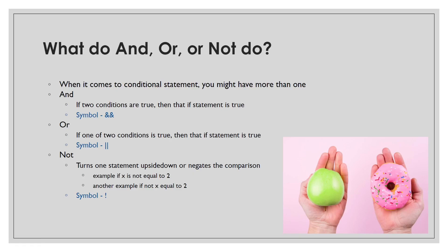And the NOT statement — it basically turns one statement upside down. For example, you could turn a true statement false or a false statement true. It can also negate the comparison, so for example x not equal to two means any number but two is true. Or if you write 'not x equals two': x equals two is true, but the NOT negates it to be false — which is the same as any number but two.